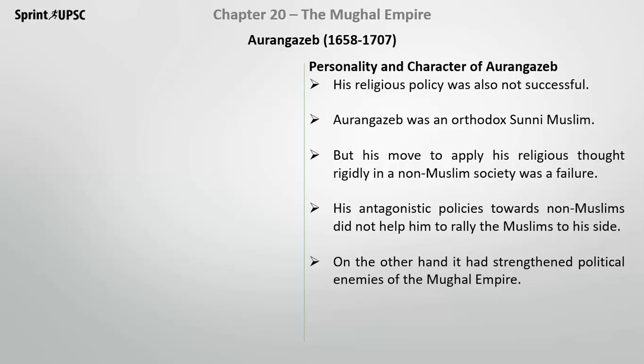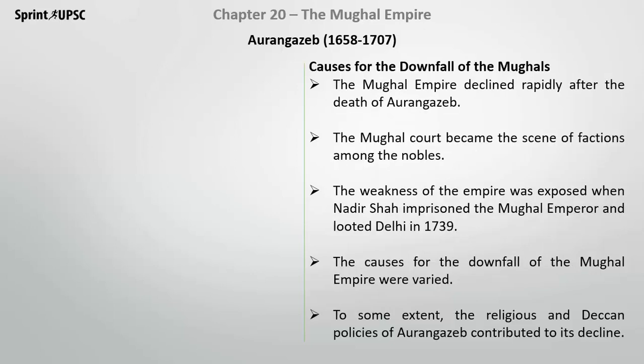His Sunni orthodox religious policy failed badly. His move to rapidly impose his religious thought on non-Muslim society was a big failure. These non-Muslim policies did not help him rally Muslims to his side either. On the other hand, he strengthened the political enemies of the Mughal Empire.